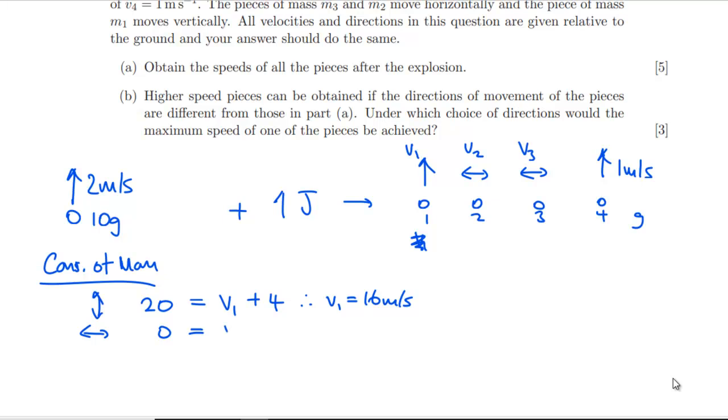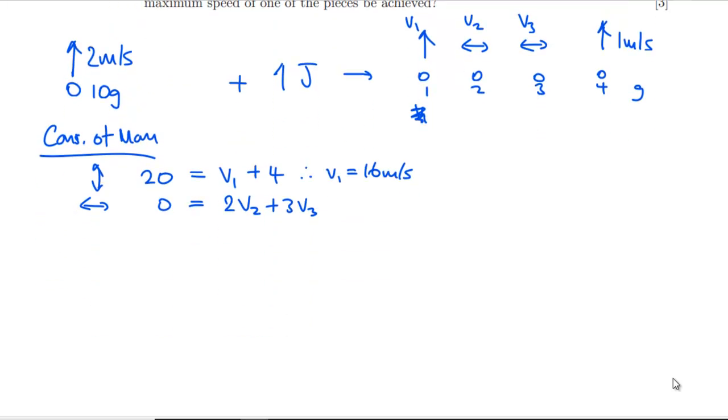So momentum: v₁ plus 4 times 1. So v₁ equals 16 meters per second. That's a good start. And then we can go horizontally and say that 0 is going to be equal to 2v₂ plus 3v₃. Alright, that's good. Now we can do conservation of energy.